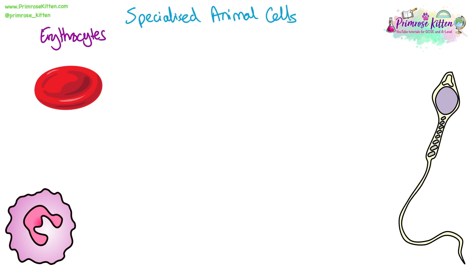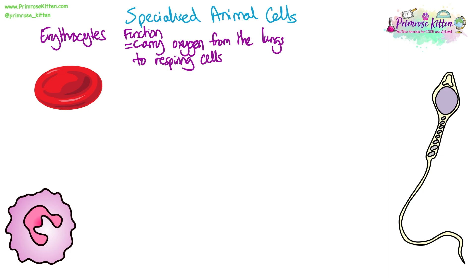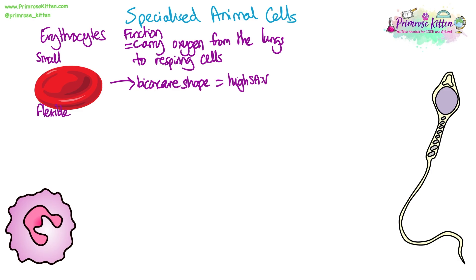Erythrocytes, or red blood cells, their function is to carry oxygen from the lungs to respiring tissues. They have specific adaptations: they are small but flexible. They have a biconcave shape, which gives them a very high surface area to volume ratio, helping to increase the rate of oxygen diffusion into and out of the cell. They don't have a nucleus and very few organelles, which means they've got more space for haemoglobin, allowing them to bind more oxygen.